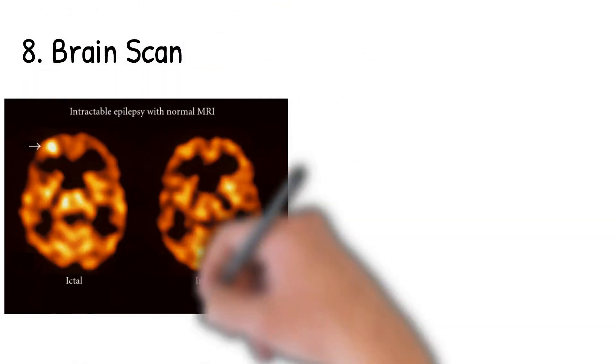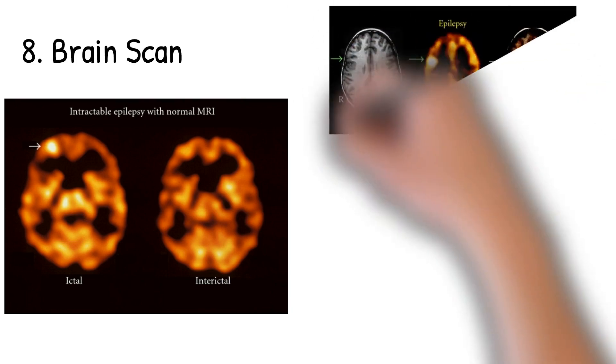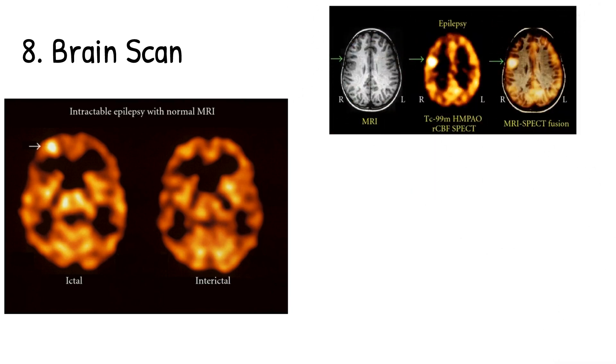Brain scans are done in general nuclear medicine with SPECT as well. Here you can see a patient with epilepsy. Ictal means during seizure, and you can see the hotspot with the arrow that's not there during the interictal phase, which is when there's no seizure. The scan on the top right shows similar things, and it's not uncommon for the MRI scan to be normal.